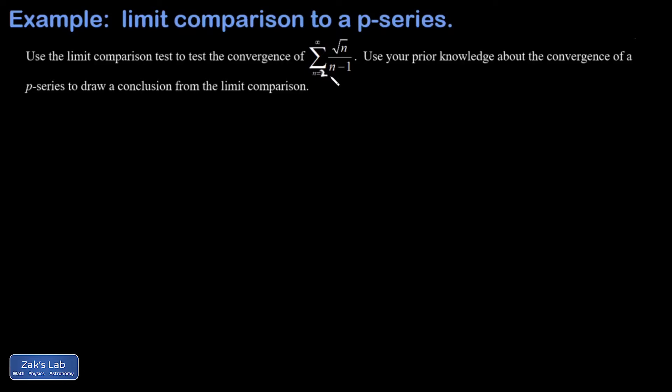So for the limit comparison, you have to be able to see what do these terms essentially get close to as n becomes large. As n becomes large, the numerator is just root n, the denominator is dominated by that n term, so these terms are getting very close to root n over n, which is one over root n.